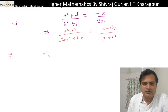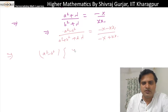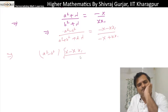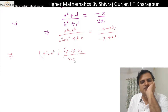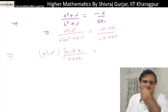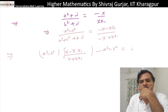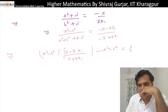So (a² minus b²)·y·y₁ divided by (x minus y·y₁) divided by (x plus y·y₁), and minus (a² minus b²) equals 2·lambda.